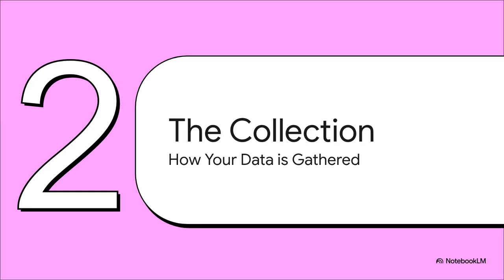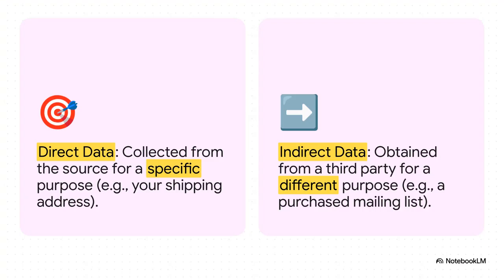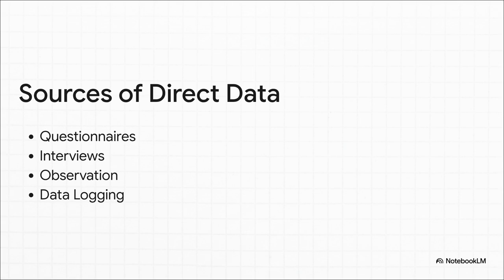Now what? The very first step on its journey is collection, and there are really two main ways this can happen. It's all about purpose. When you gave that online store your address, that was direct data — they collected it from you for one specific reason: to ship your stuff. But what if that store then sells a list of its customer addresses to a marketing company? For that marketing company, it's suddenly become indirect data. It's the exact same data, but its purpose and its origin story have totally changed. In our little shopping trip, we gave them direct data through what's basically a questionnaire — that's all an online checkout form really is. This is probably the most common way we create data firsthand every single day.